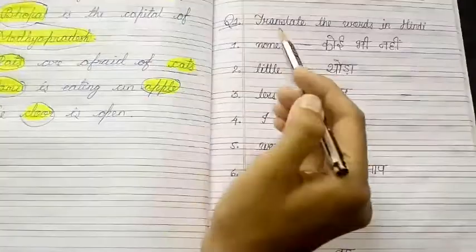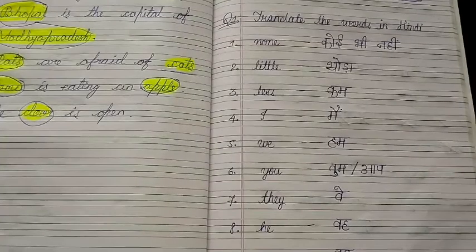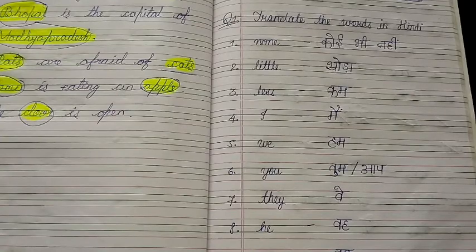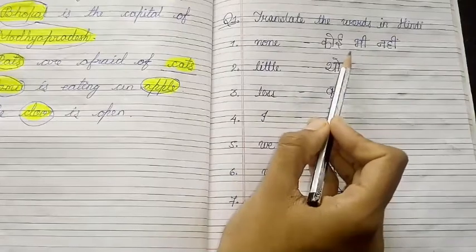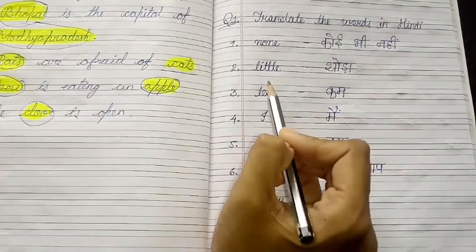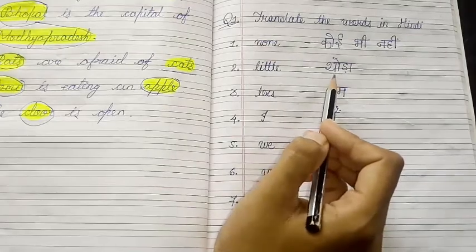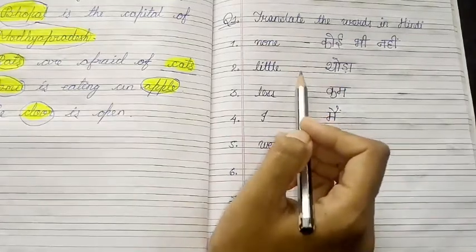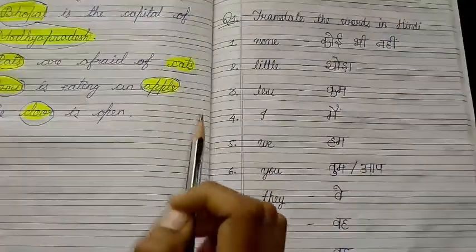The first question is: translate the words in Hindi. The first word is 'none' — the answer is 'no' (nahi). Next, 'little' — the answer is 'thoda'. You will also find the answers in the columns given in your textbook; we are writing the same answers here.